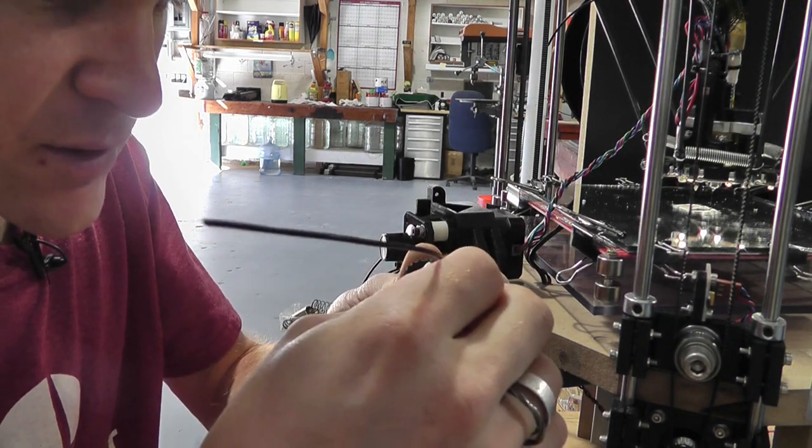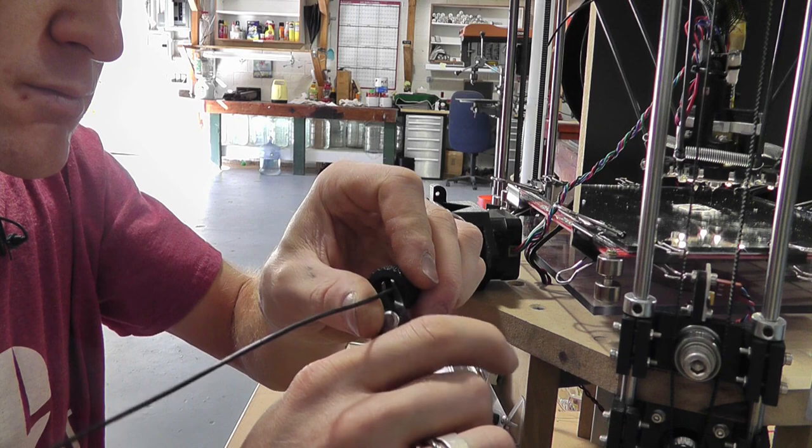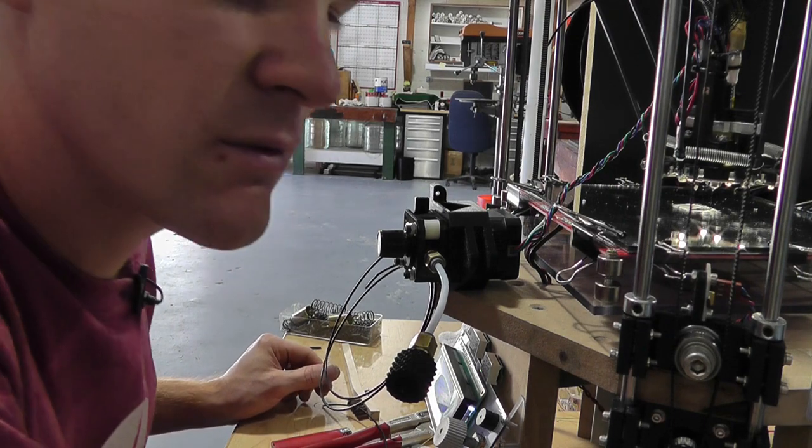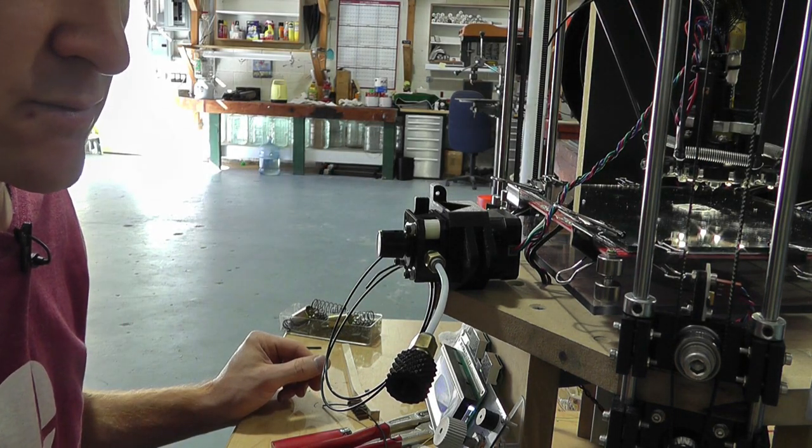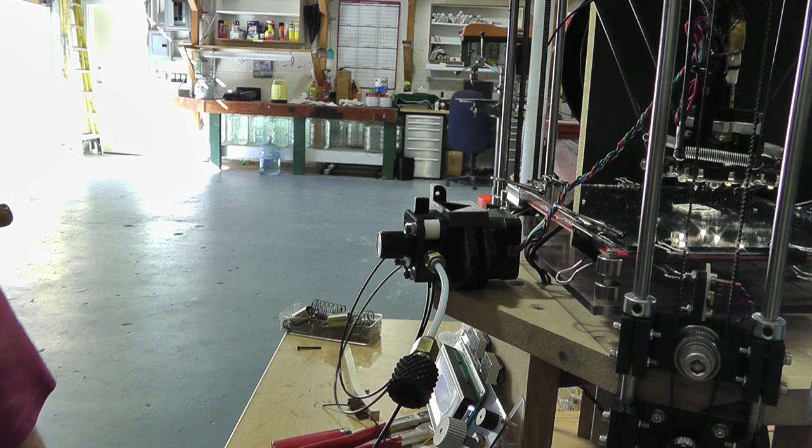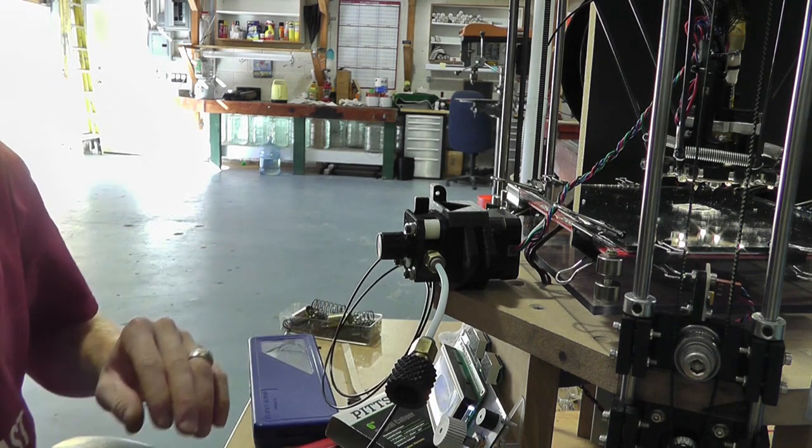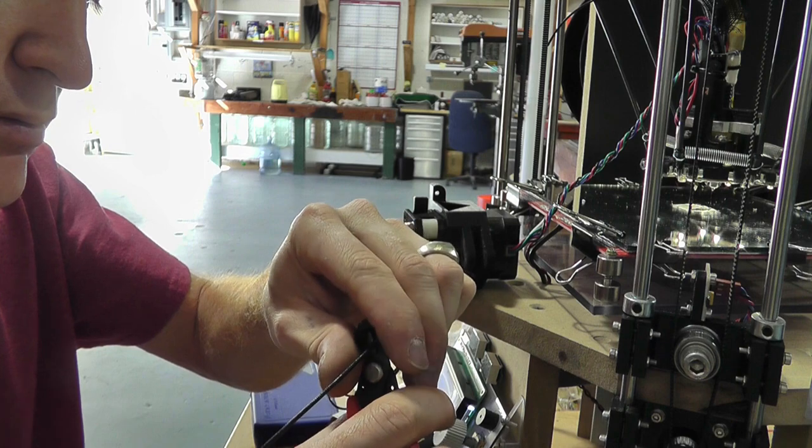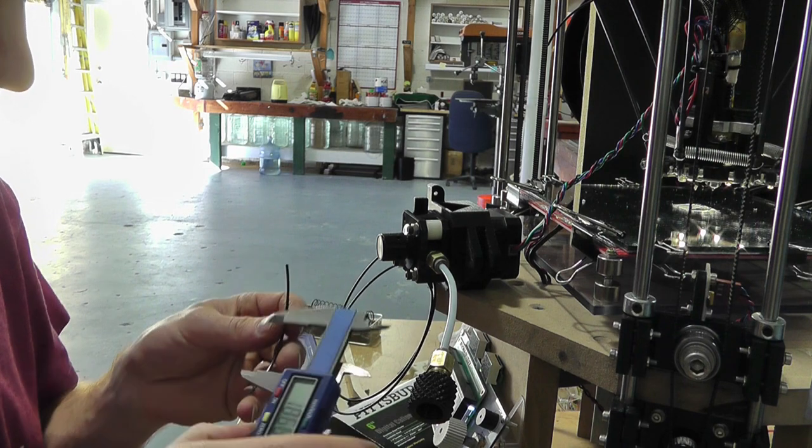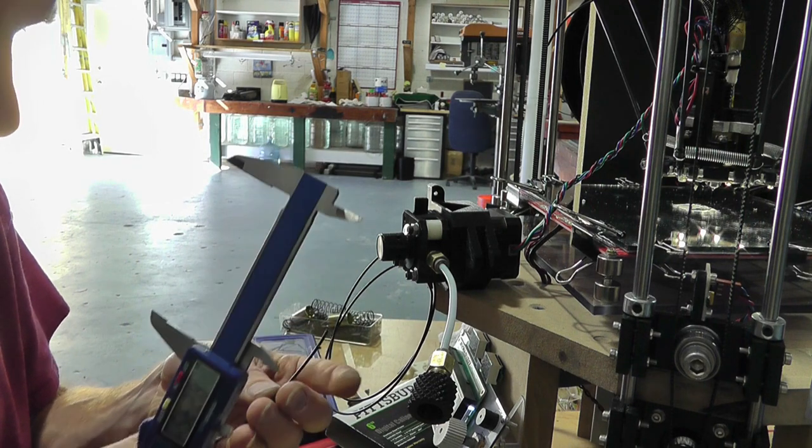Now, one of the tests that I really would like to do. Okay, I'm going to cut that flush, and I'm going to say extrude 100 millimeters. And it's going to feed through 100 millimeters. And I'm going to cut it flush again. I'm going to measure this and see if it is 100 millimeters. And if it's not, then I can adjust for that.